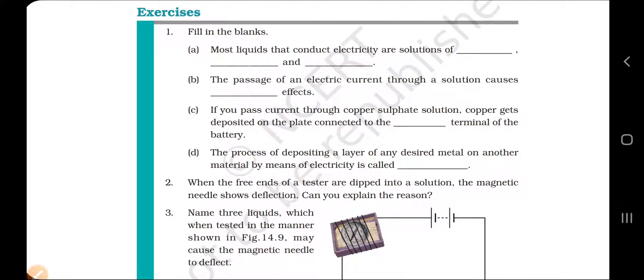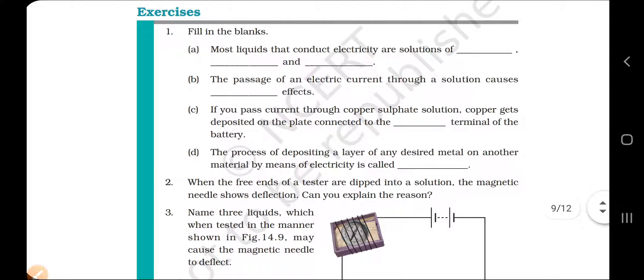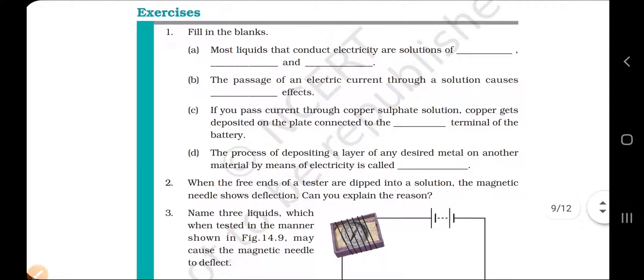Number C. If you pass current through a copper sulfate solution, copper gets deposited on the plate connected to the terminal of the battery. Which terminal? Copper is positively charged. So it will get connected to the negative terminal of the battery. The answer will be negative, that is the cathode.